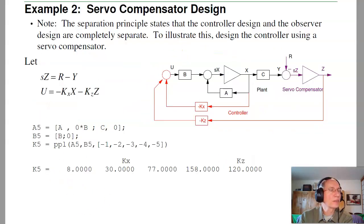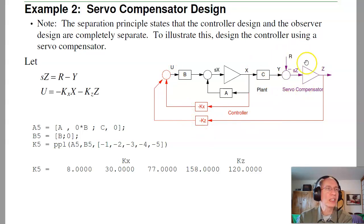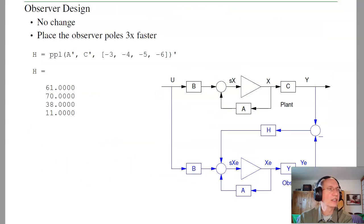Now a second example: when you design the observer, it really doesn't matter how you come up with the feedback control law — the observer doesn't care how you get u. Whatever you come up with, apply the same u to both the plant and the observer. To illustrate that, let's use the second approach for defining the feedback control law: design a feedback control law with a servo compensator, integrating the difference between y and the set point, then use full state feedback for the augmented system — four states from x, one state from z.